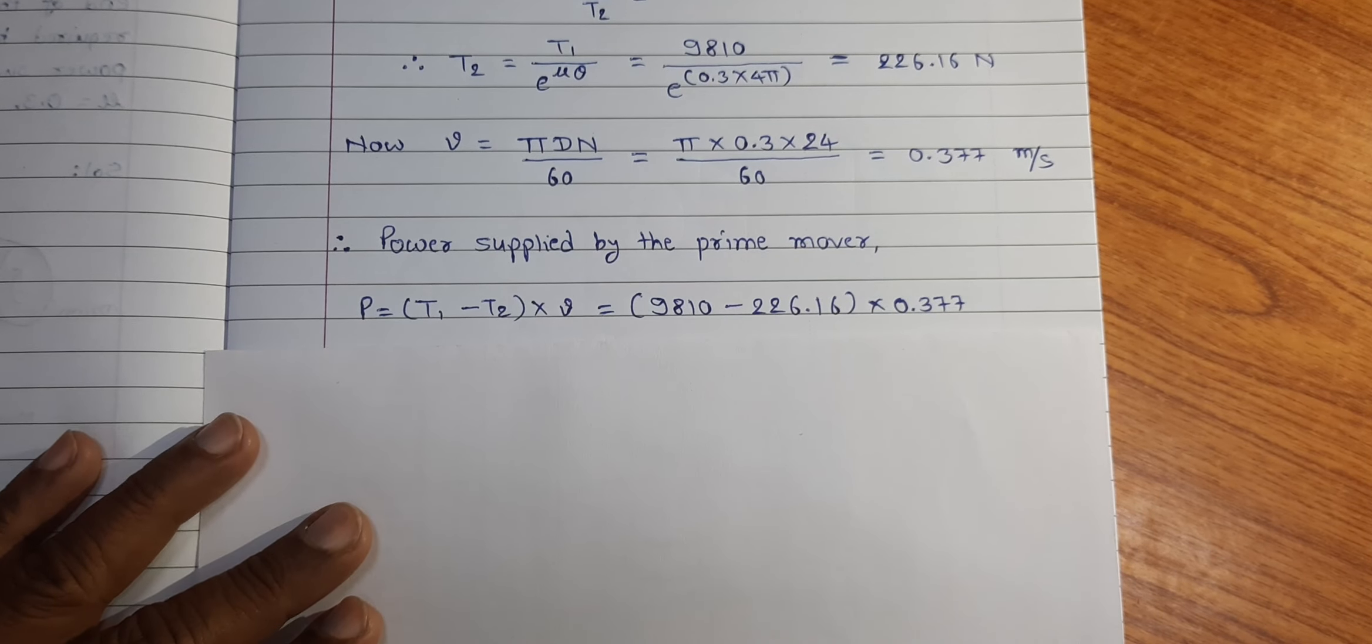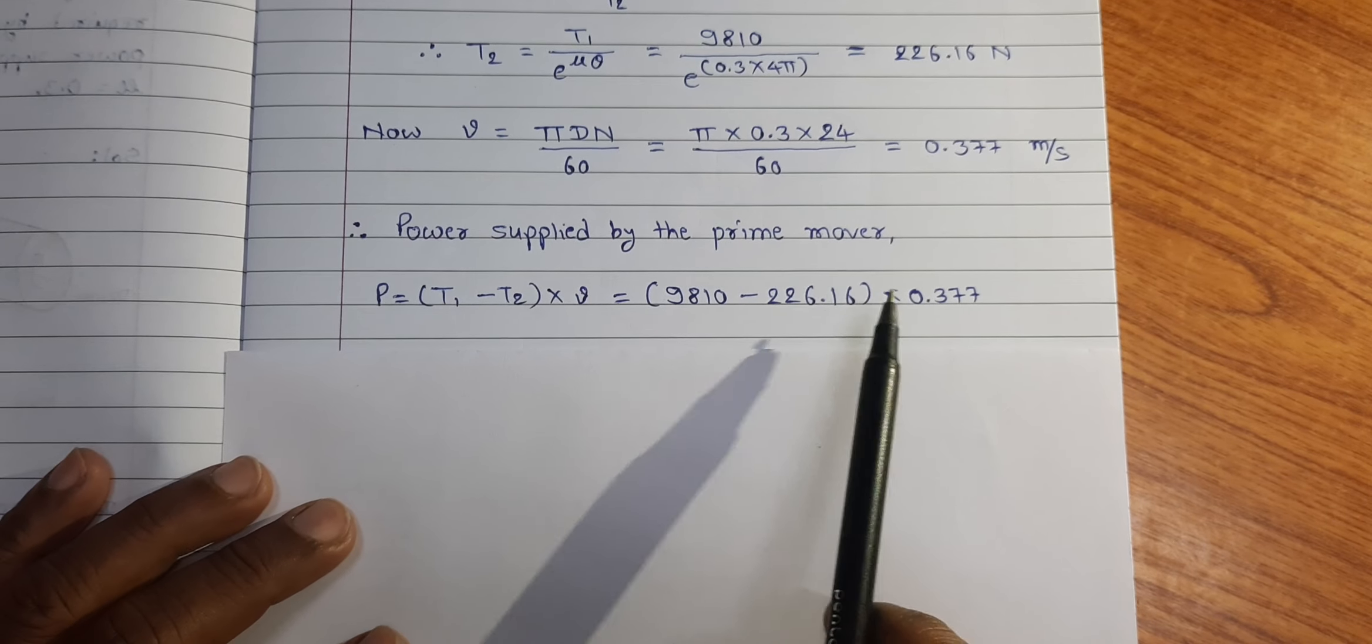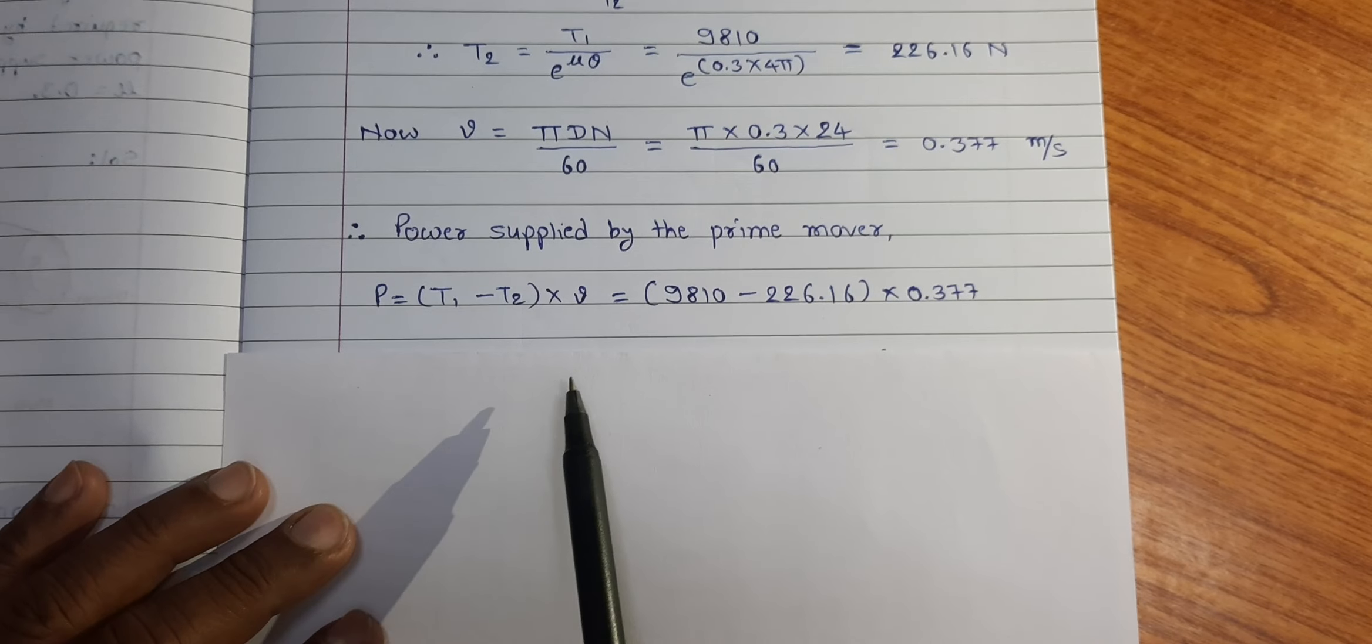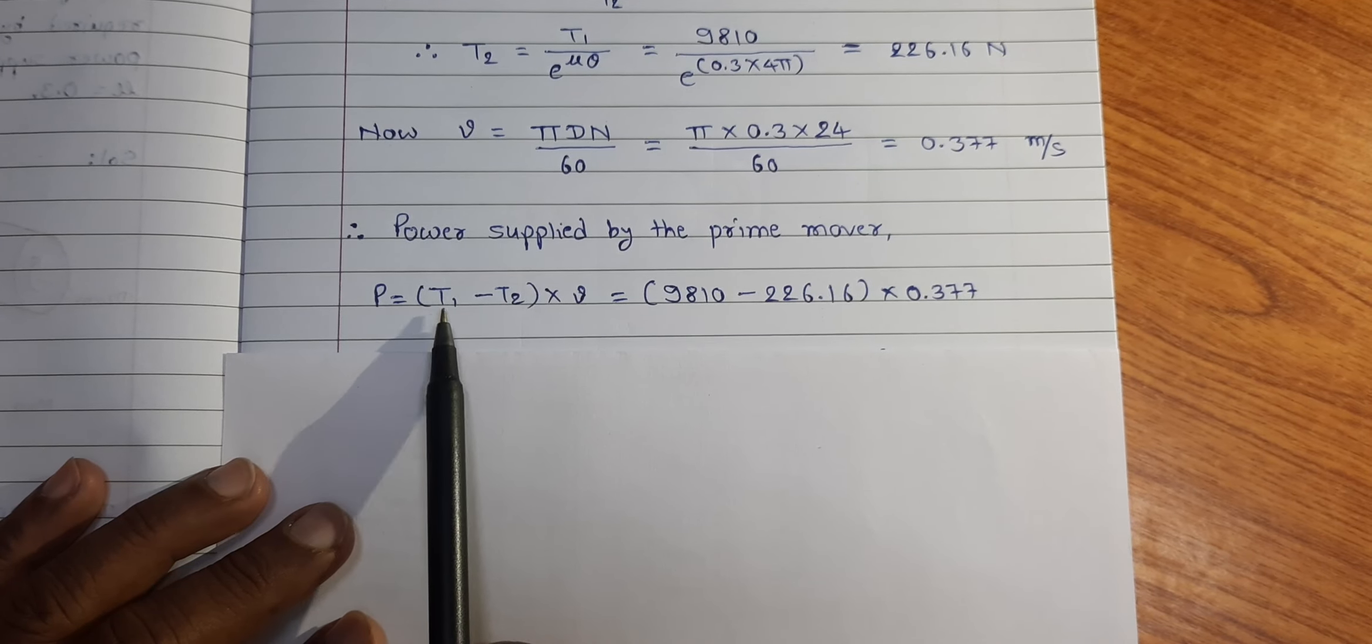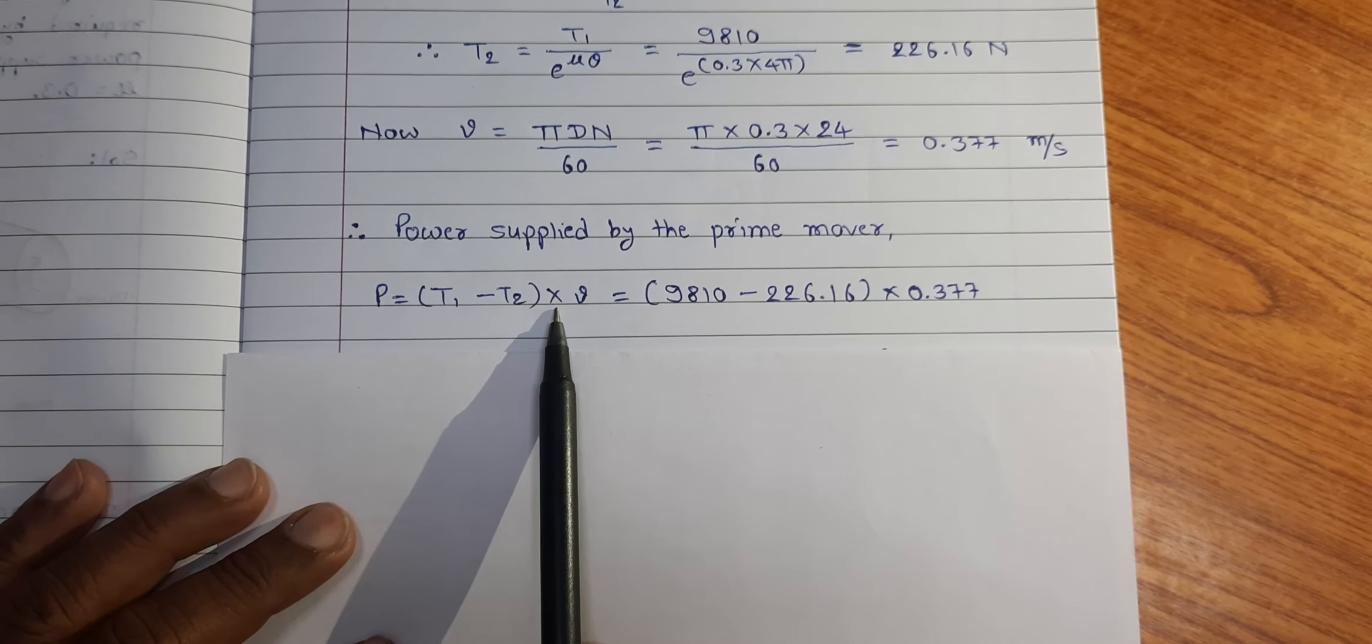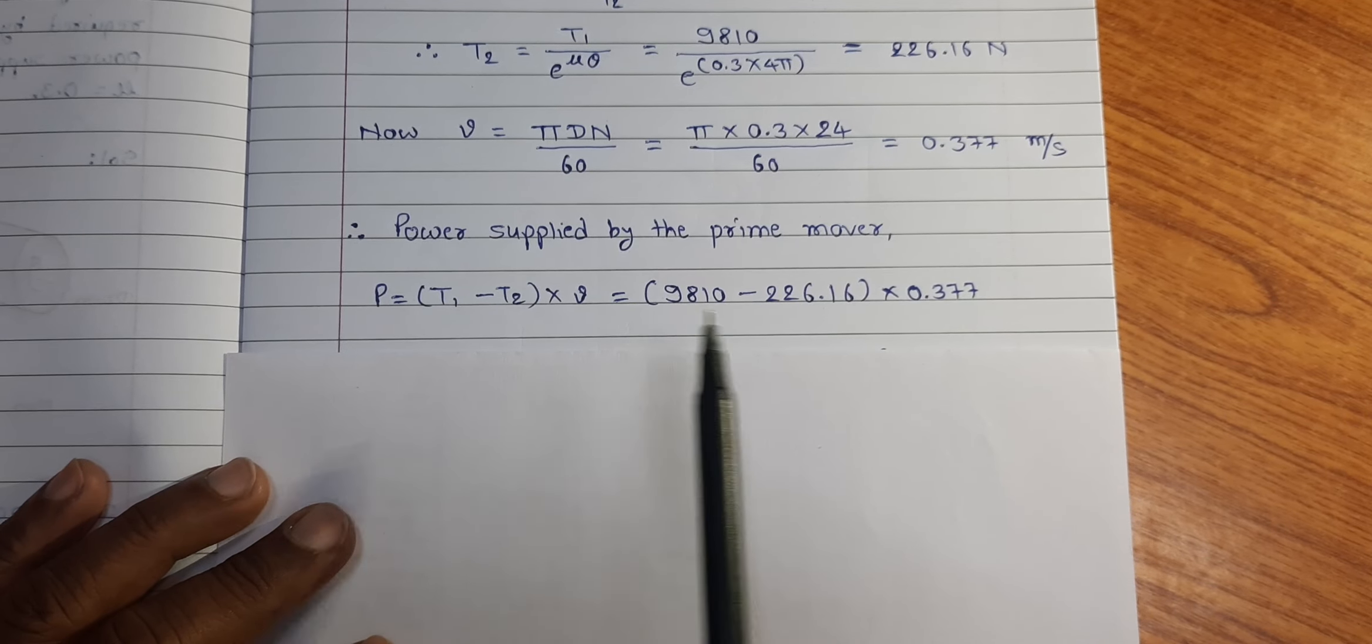Now, power supplied by the prime mover is given by P is equal to as we have written earlier difference of two tensions tight side tension T1 minus slack side tension T2 into peripheral velocity.